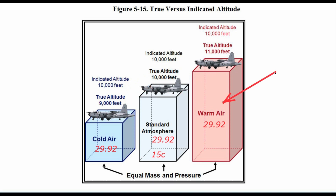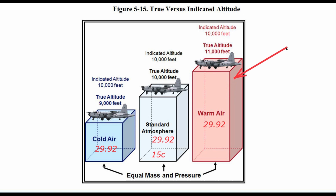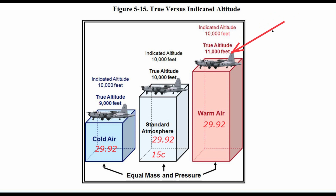In the warmer air example, we have the same mass and the same pressure, but our altitude indication is 10,000 feet while our true altitude is 11,000 feet. So you can see the effects that temperature has on our altimeter.